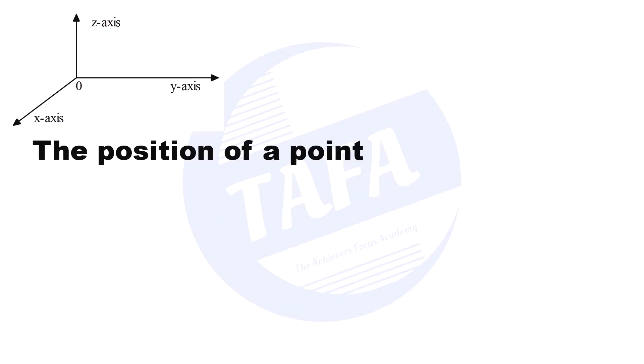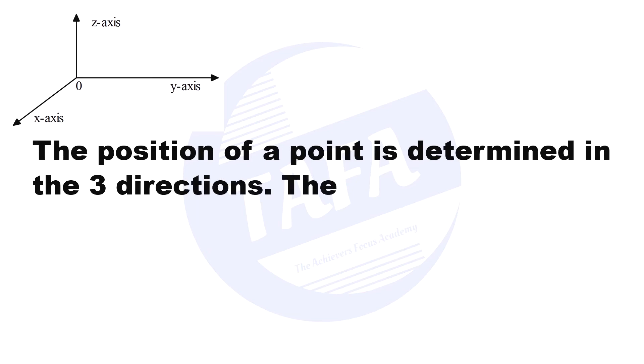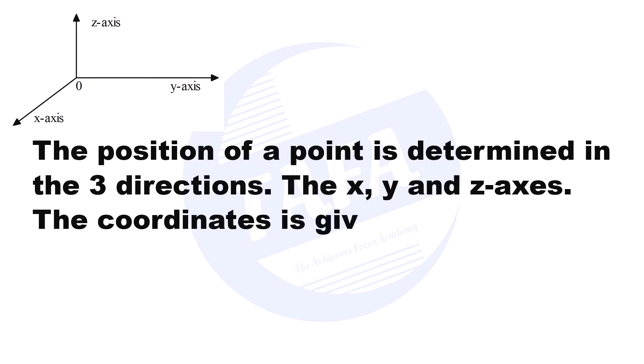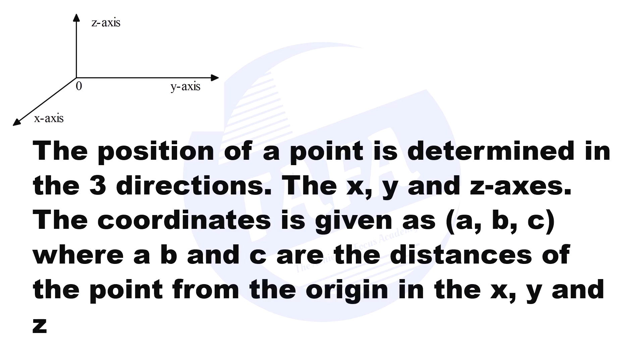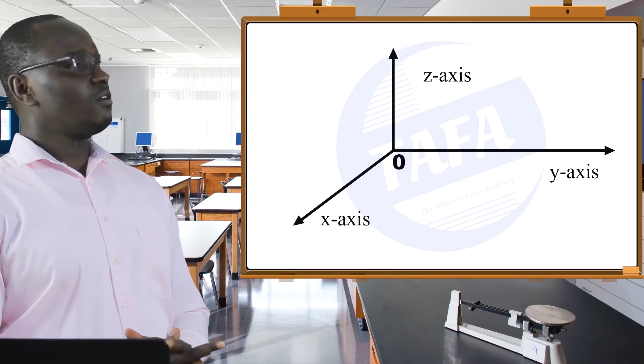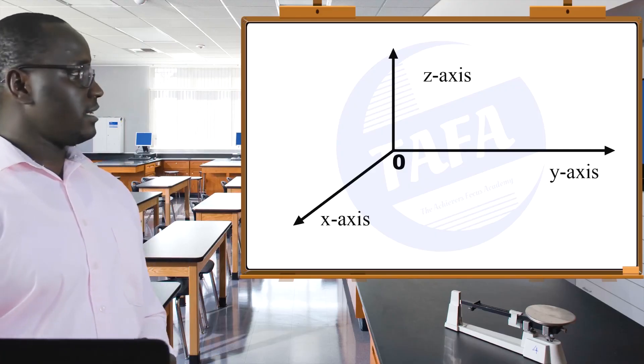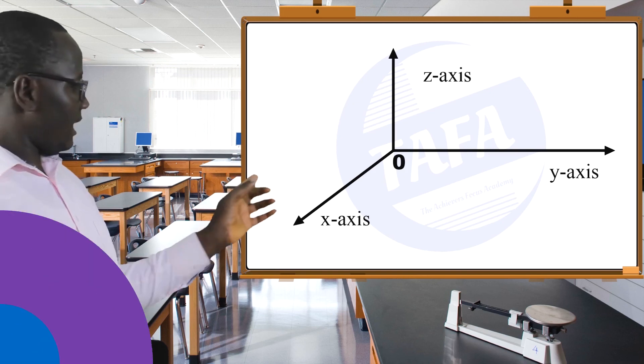The position of a point is determined in three dimensions by giving the x, y, and z axes. The coordinate is given as (a, b, c), where a, b, and c are the distances of the point from the origin in the x, y, and z axes.